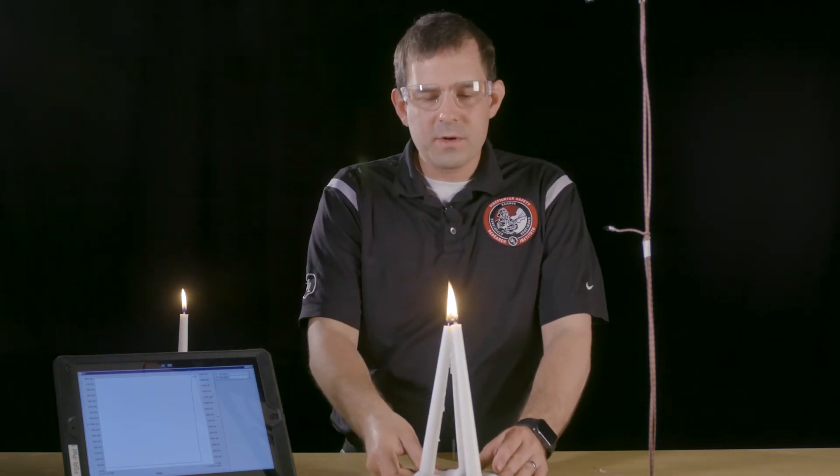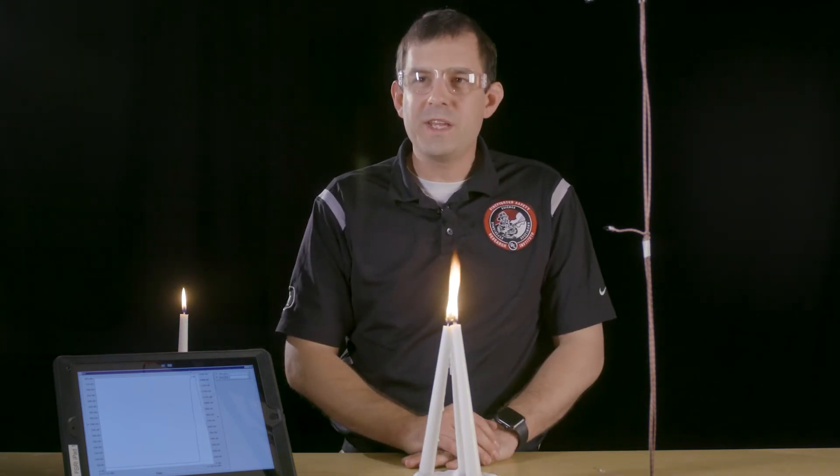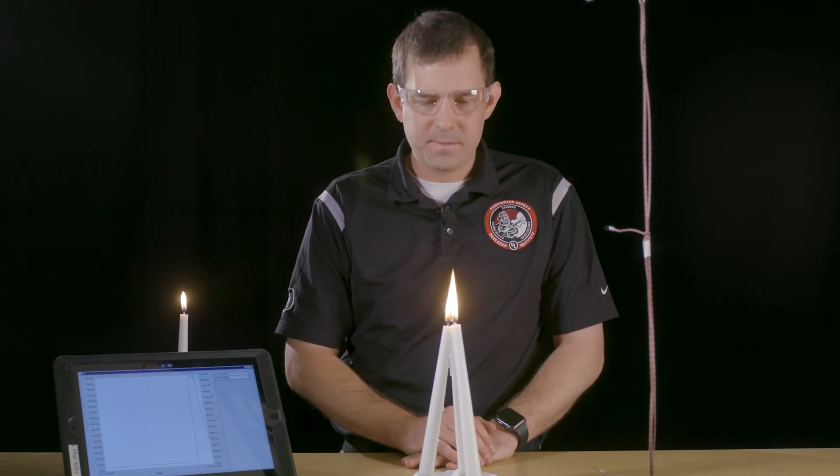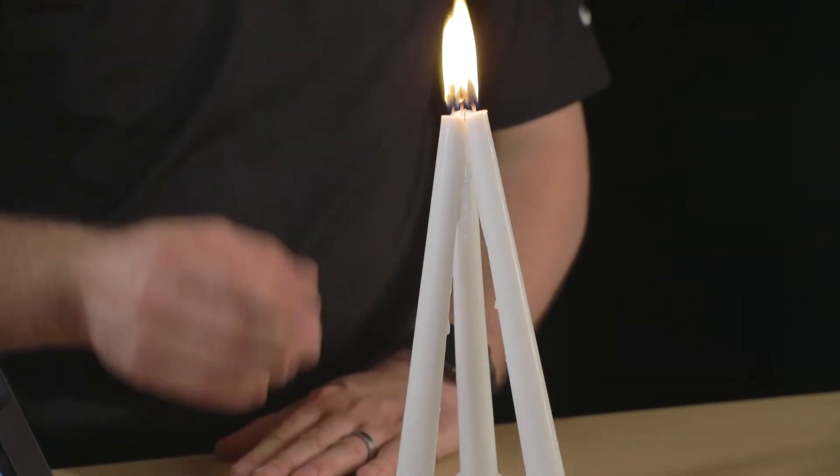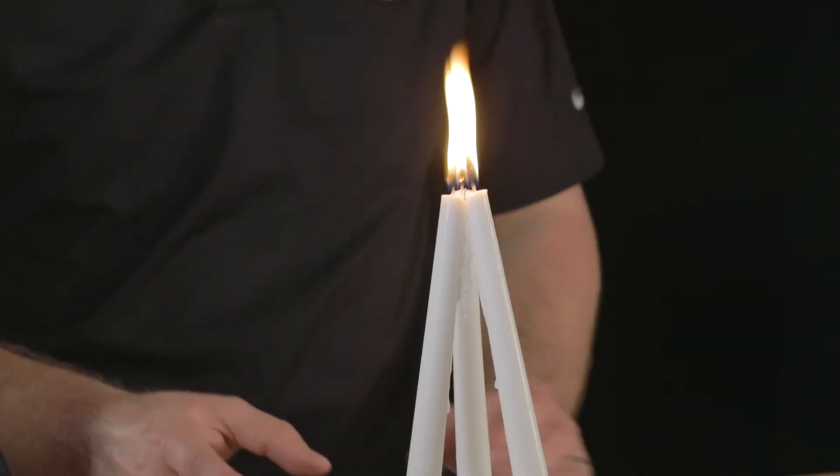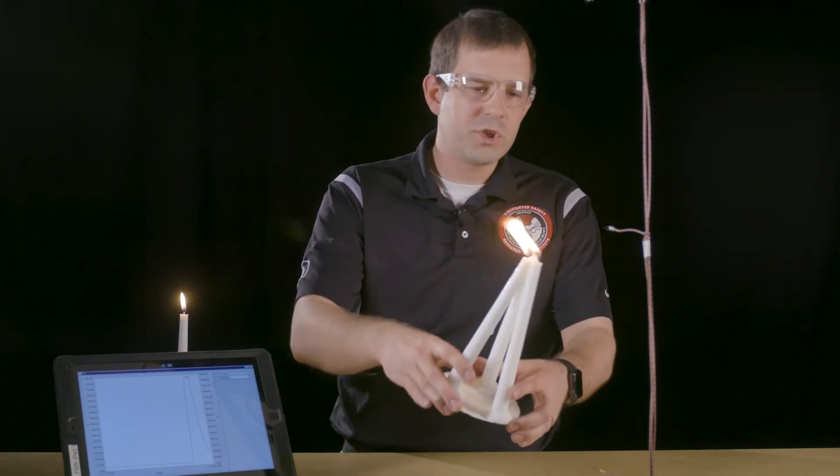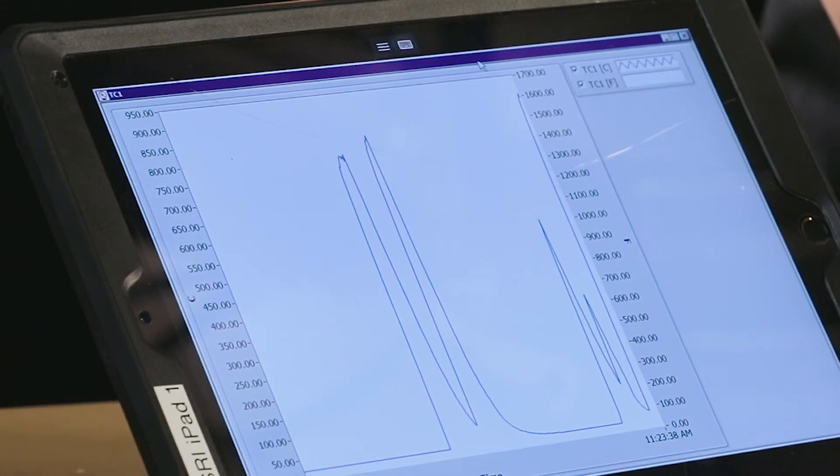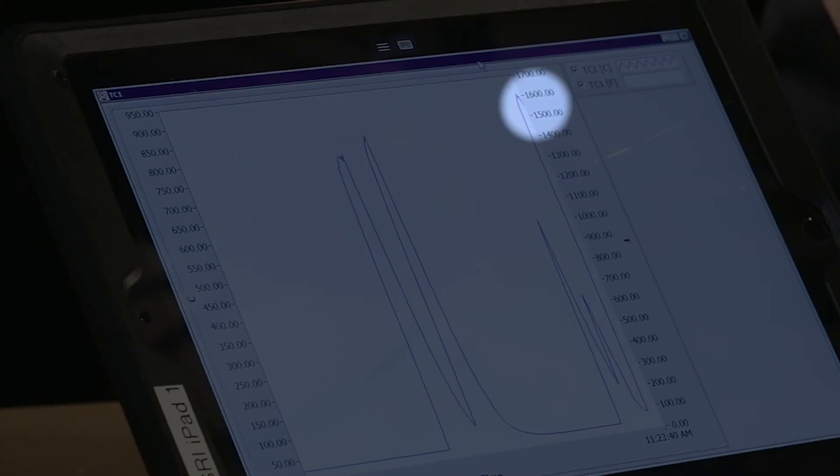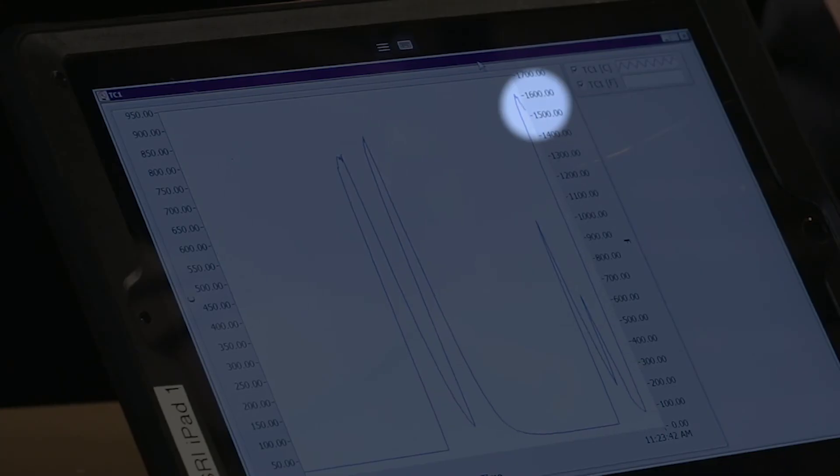When we triple the number of candles, we triple the energy release rate or the heat release rate. Instead of being 60 watts, we're approximately 180 watts. However, we didn't necessarily change the temperature of the candle flame. We'll check with our thermocouple. We notice the data system increases to between 1500 and 1600 degrees Fahrenheit.